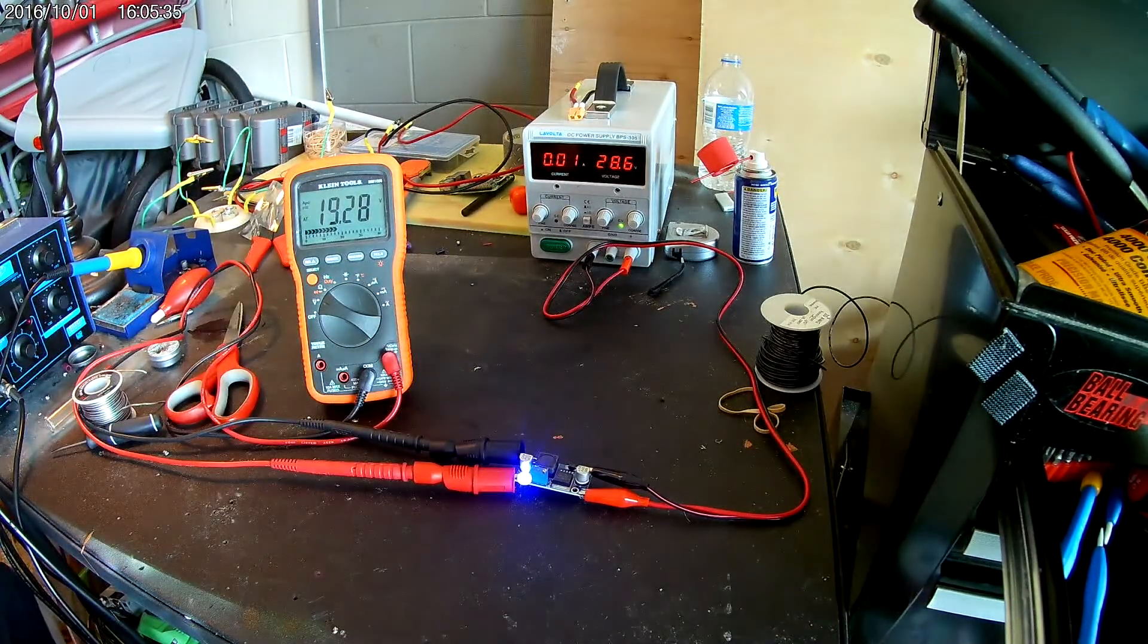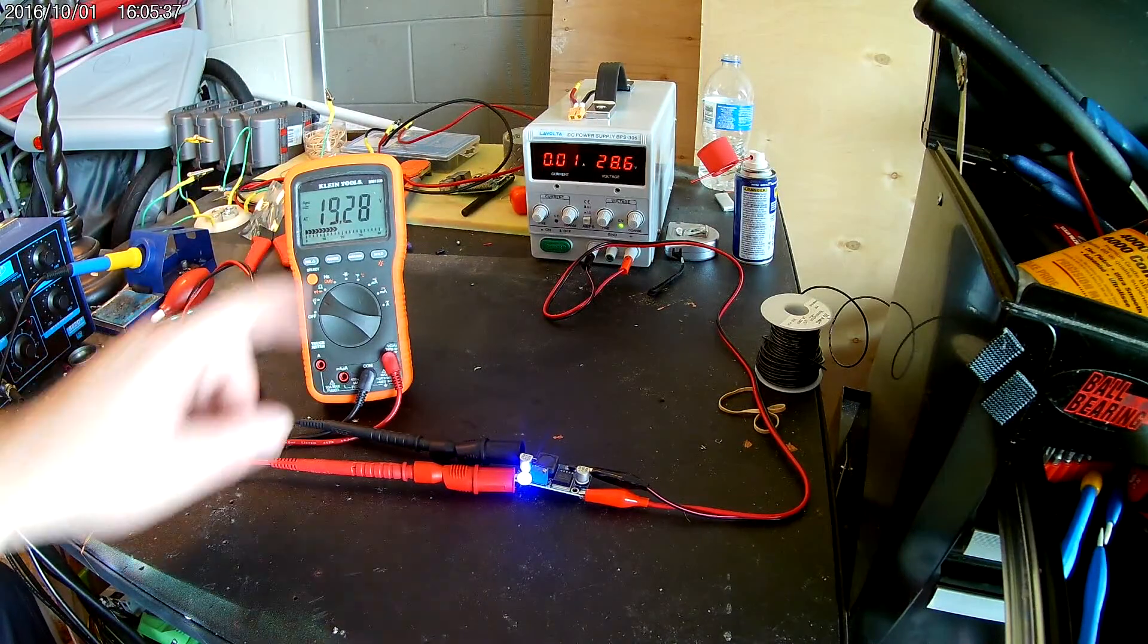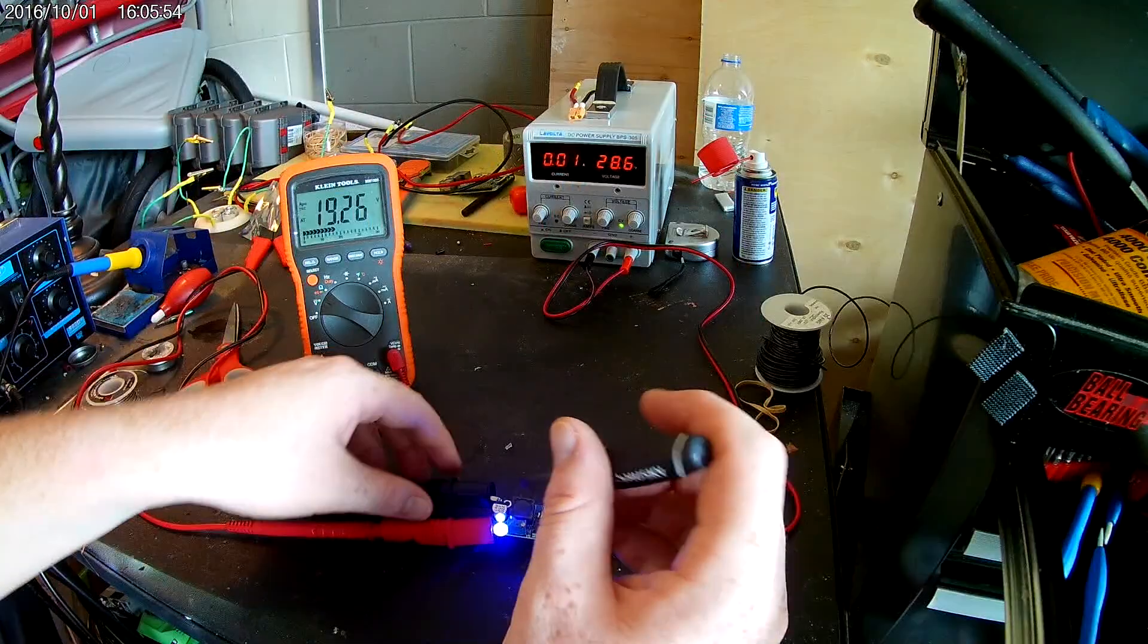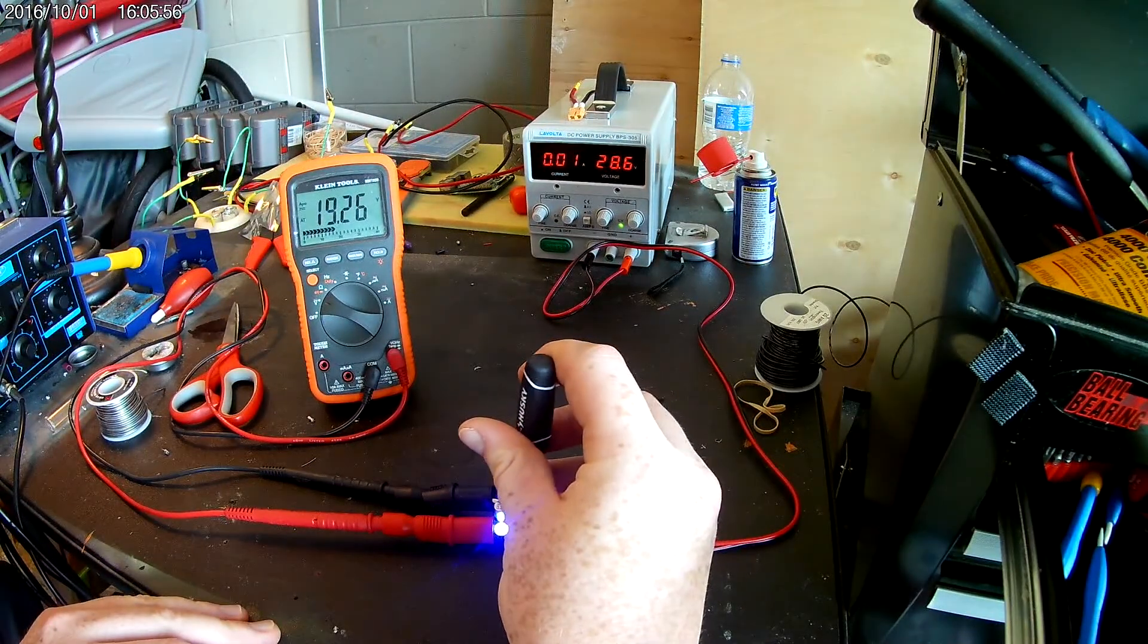And you can see that we are, the output is 19 volts. Now how do we reduce it? We take a screwdriver. You're going to put your flathead screwdriver on it.